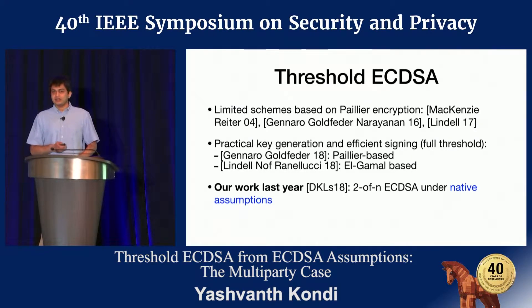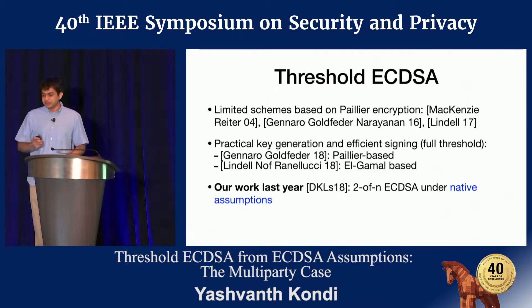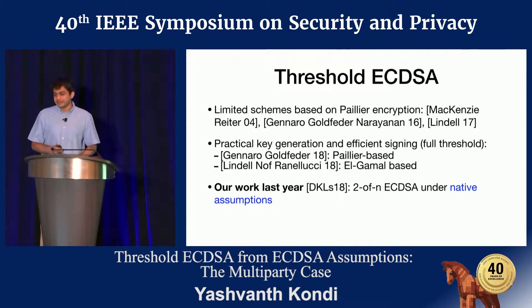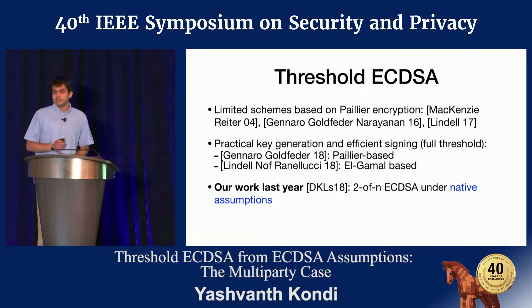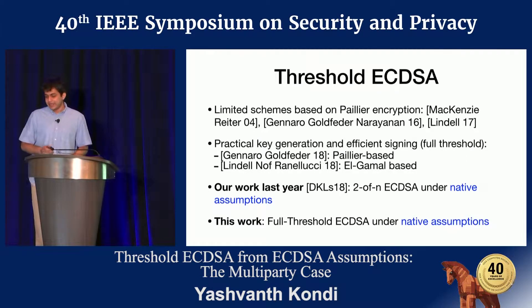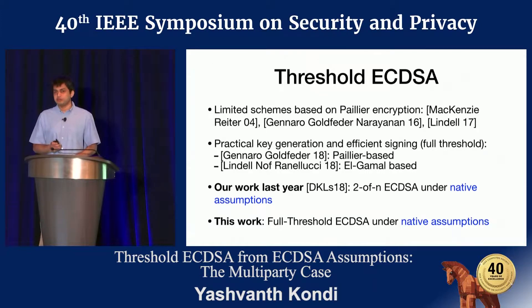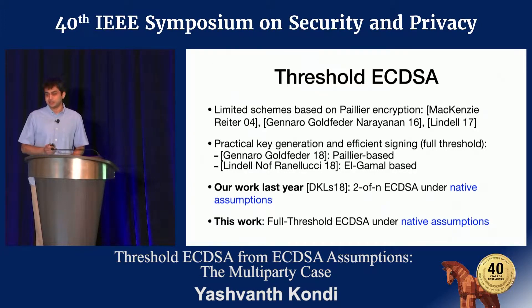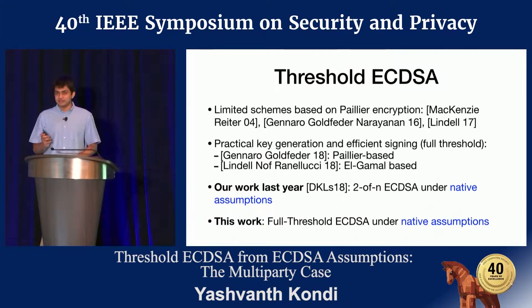At Oakland last year, we presented a way to get ECDSA signatures in the two-of-n case under native assumptions — that's assumptions in the same curve as the signature itself. In this work, we extend our work from last year to accommodate a full threshold under the same assumptions.